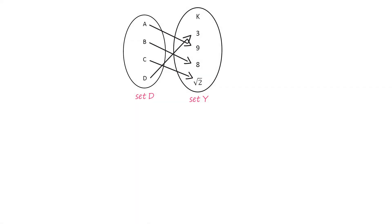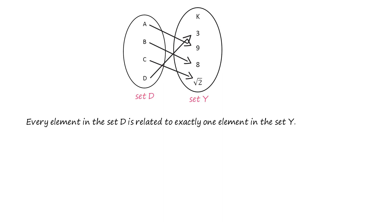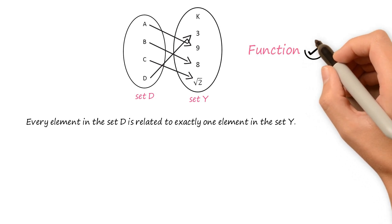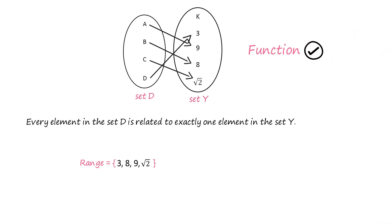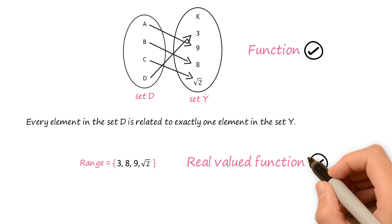Consider the sets D and Y related to each other as shown. Pause this video and try to figure out if this relation is a real valued function. Every element in the set D is related to exactly one element in the set Y, so the given relation is a function. The range of this function consists of the elements 3, 8, 9, and square root of 2. Since the range is a set of real numbers, this function is a real valued function.